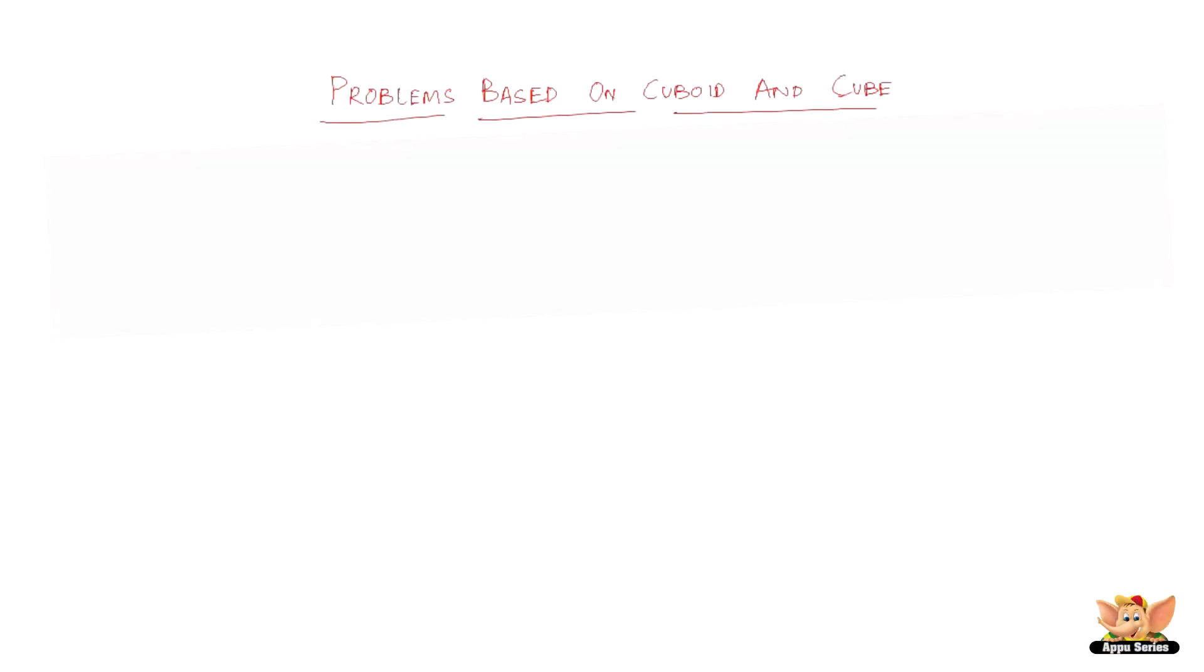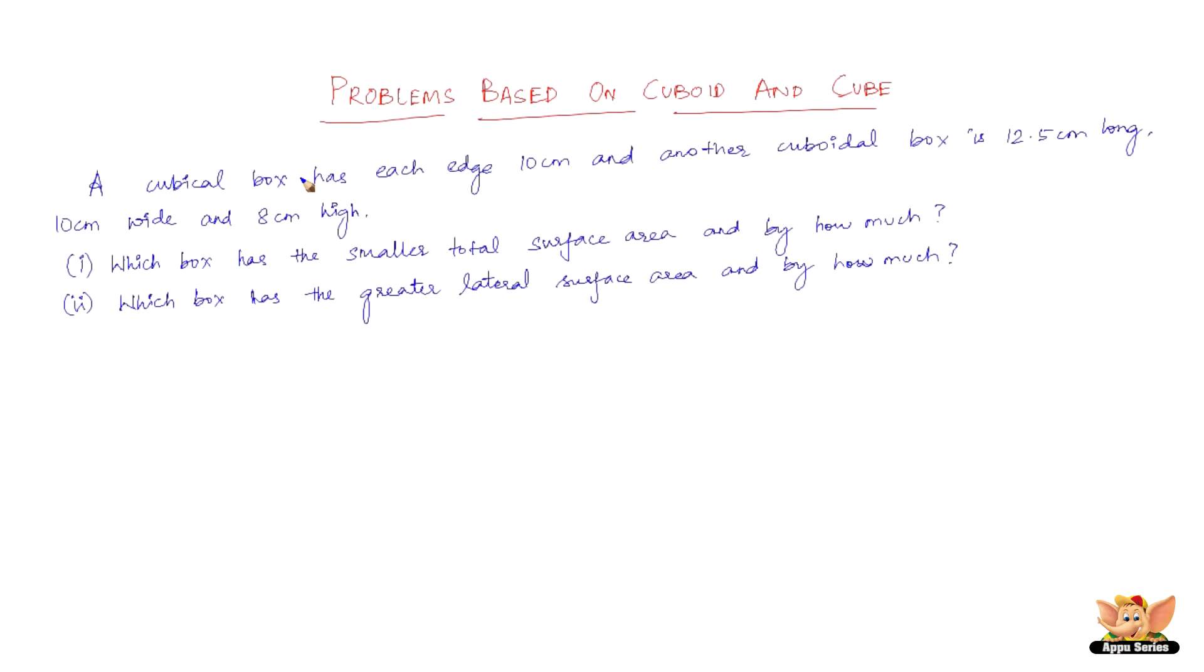In this video let us continue to solve problems based on cuboid and cube. The question goes like this: A cubical box has edge 10 cm and another cuboid box is 12.5 cm long, 10 cm wide and 8 cm high.